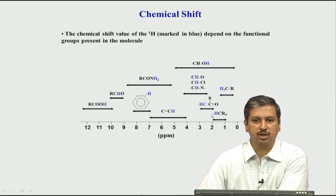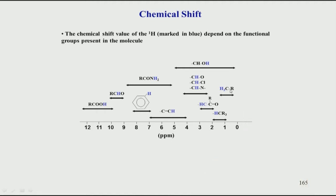For example, methyl protons typically come between 0 to 2 ppm, unless attached to an electronegative atom. If they are in an aliphatic part — for instance CH3-CH2 — this CH3 group will almost always come somewhere between 0 to 2 ppm. Methyl groups are easy to find in an NMR spectrum because they are very strong peaks, and because of the 3 equivalent hydrogens the peak area is also very high. They are typically the tallest peaks in the NMR spectrum.